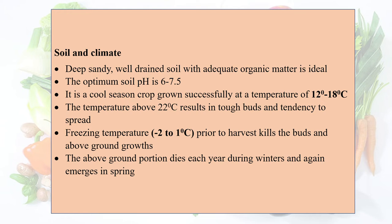Regarding soil and climate, deep sandy well-drained soil with adequate organic matter is ideal for globe artichoke. The optimum soil pH is 6 to 7.5. It is a cool season crop grown successfully at temperatures of 12°C to 18°C.